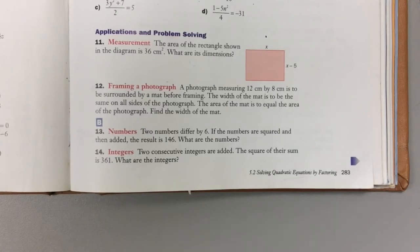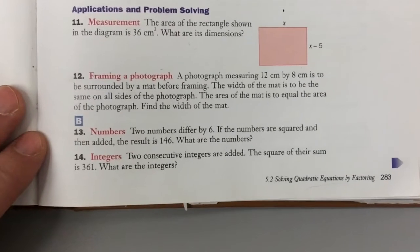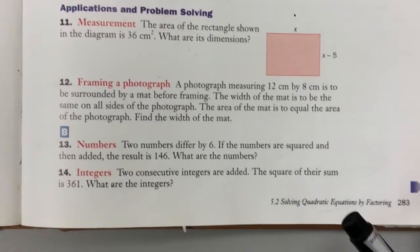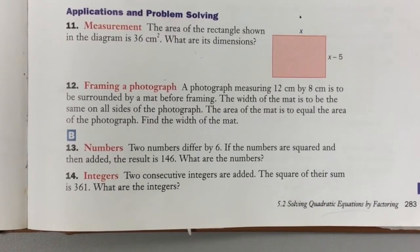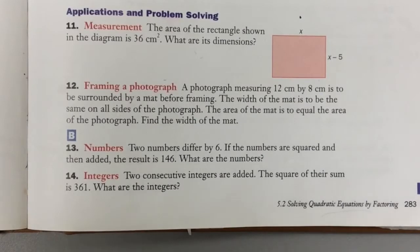We're going to look at some quadratic equations word problems. The first problem is number 12 on page 283. It's titled 'Framing a Photograph.' A photograph measures 12 centimeters by 8 centimeters and is to be surrounded by a mat before framing. The mat is a border that goes around the picture.